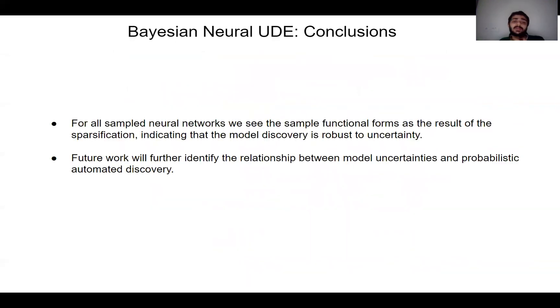Thus, for all sampled neural networks, we see that the functional forms are correct, which indicates that the model discovery is robust to uncertainty. Future work will further identify the relationship between model uncertainties and probabilistic automated discovery.